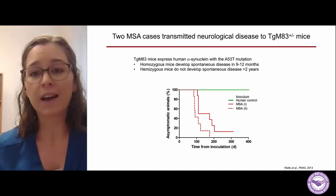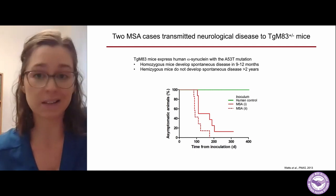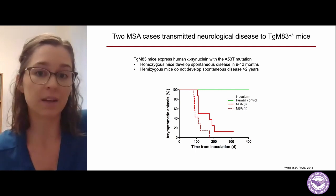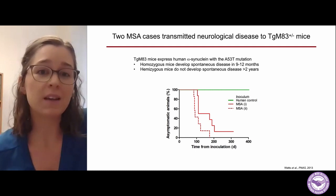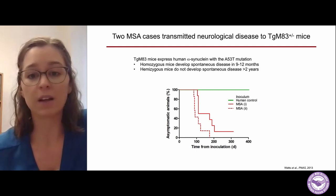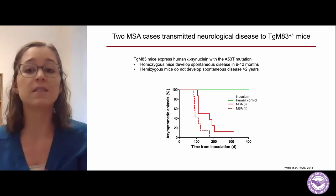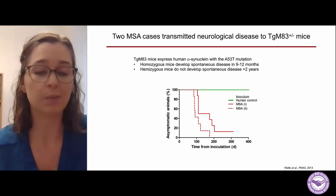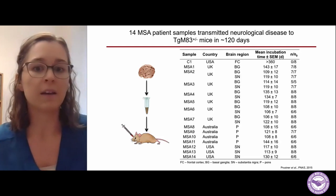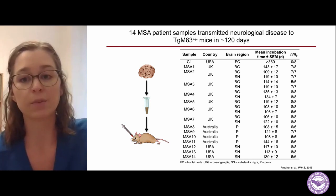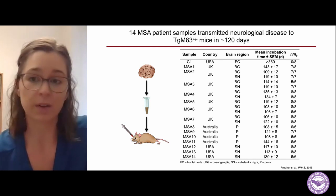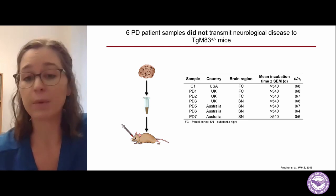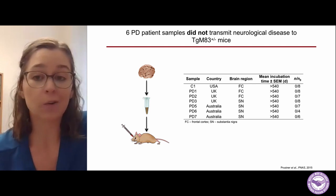Mice with two copies of this gene develop a spontaneous disease, which is why all of the studies use a hemizygous mouse model, meaning there's only one copy of this mutation. Using this animal model, when we take brain samples from MSA patients, we can actually transmit MSA to these mice, suggesting a prion-like mechanism. They expanded this to 14 MSA patient samples, which all transmitted neurological disease to the mice in about 120 days. But when they repeated the same experiment with six Parkinson's disease samples, none of the mice became clinically ill — even out past 540 days.